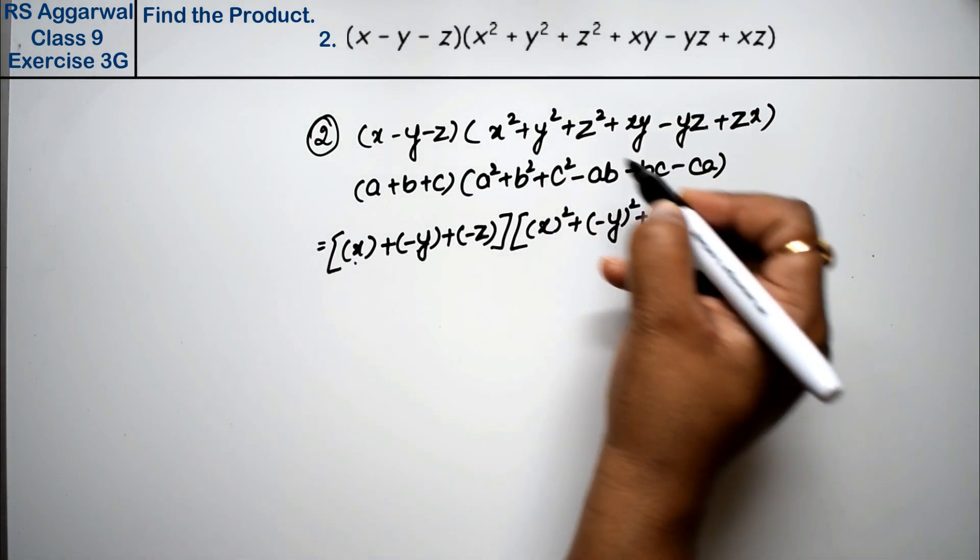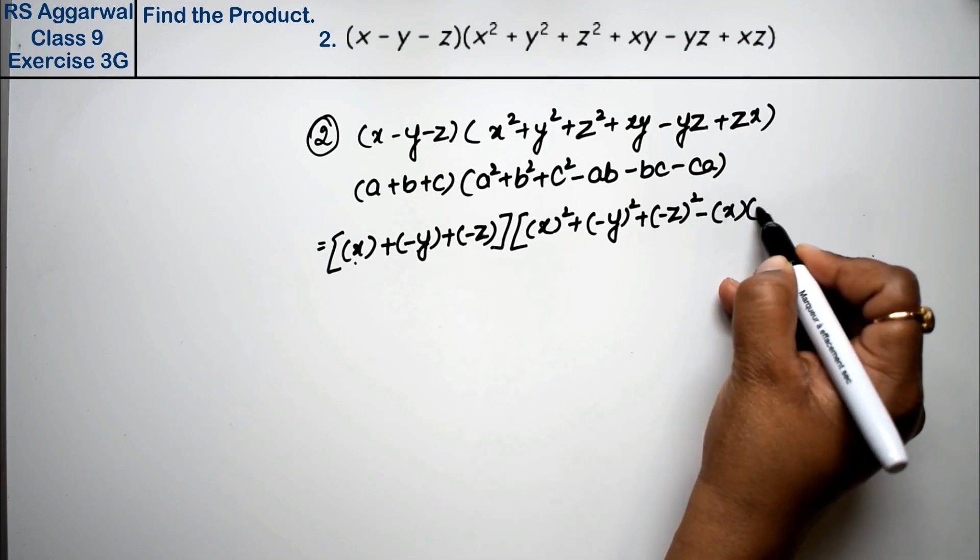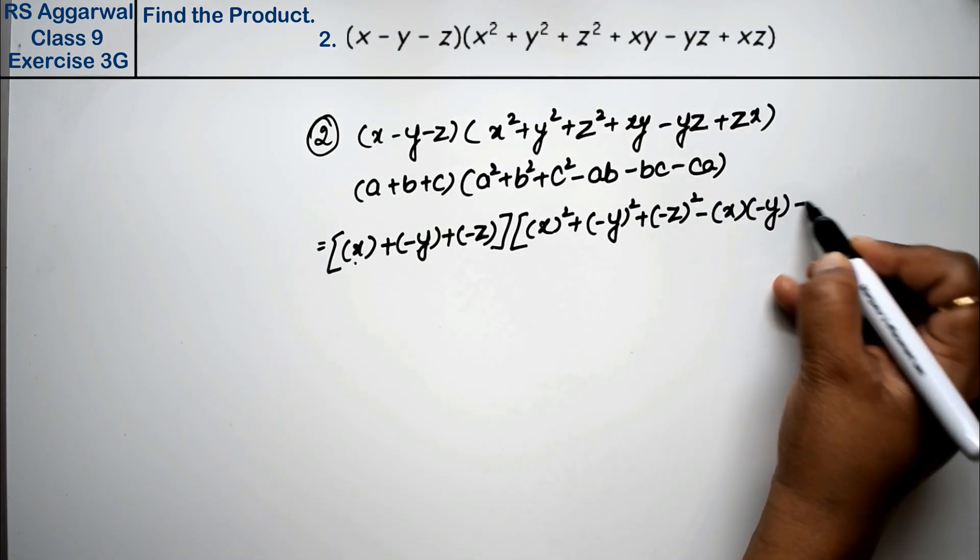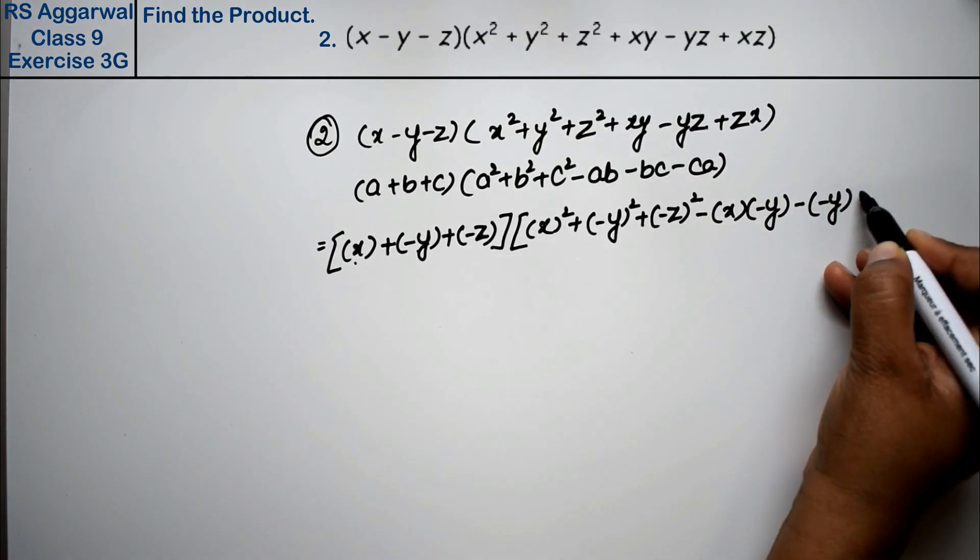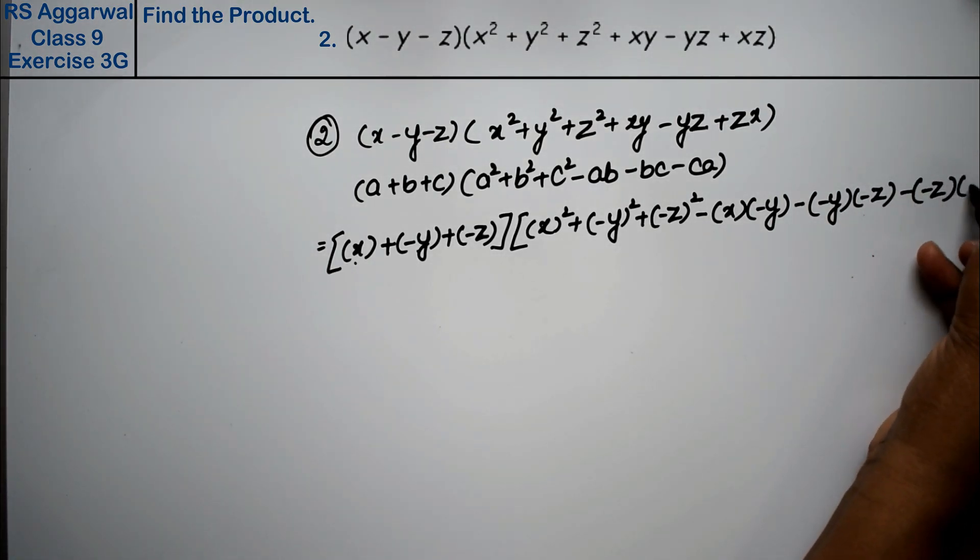minus z is even, plus z² - ab - (-y) × (-z) - (-z) × x.